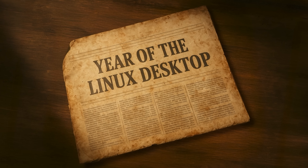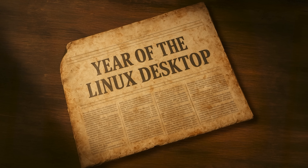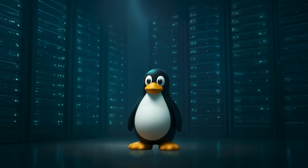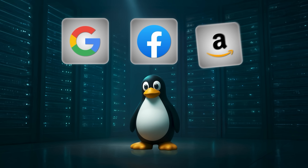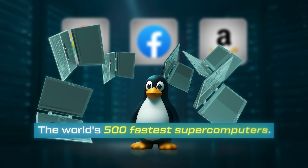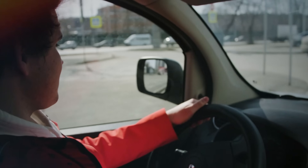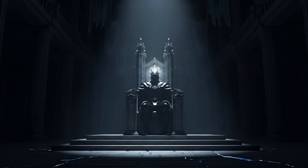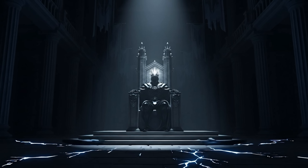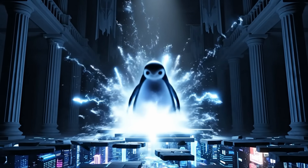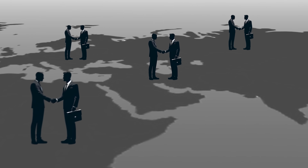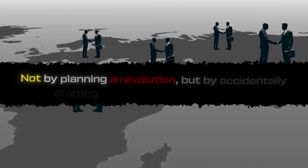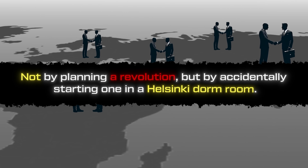While the year of the Linux desktop never quite came to pass in the way the community had hoped, Linux won in a much bigger way. It became the invisible backbone of the digital world. It runs the servers for Google, Facebook, and Amazon. It powers nearly all of the world's 500 fastest supercomputers. It's in your smart TV, your car, and the New York Stock Exchange. And through Android, it's in the pockets of billions of people. The revolution didn't happen by overthrowing the king — it happened by building the foundation for a new world right under his feet. It's a story that proves that passionate people sharing code across borders can change the world, not by planning a revolution, but by accidentally starting one in a Helsinki dorm room.